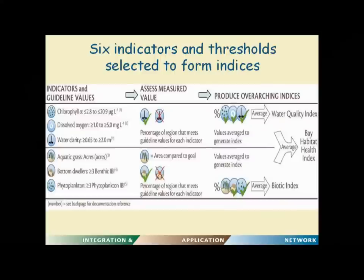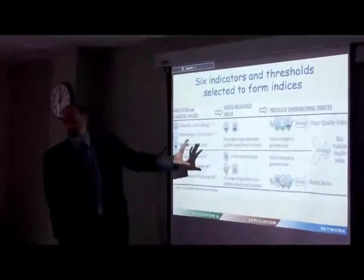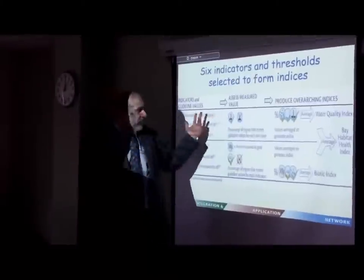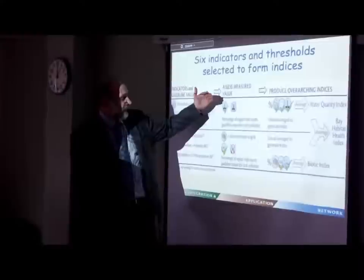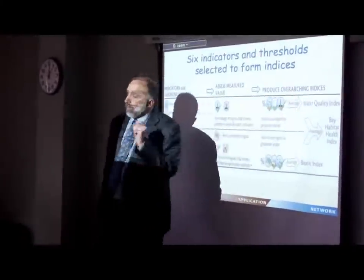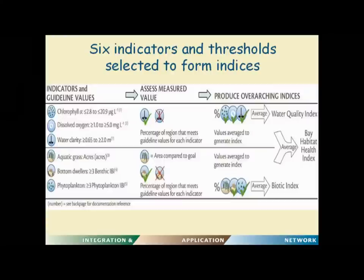The idea I want to present today involves the Bay Health Index developed as part of the EcoCheck, NOAA, and University of Maryland Center for Environmental Science partnership. We take three indicators of water quality — chlorophyll A, dissolved oxygen, and water clarity — establish thresholds for those three, plus three biotic indicators: aquatic grasses, bottom dwellers (the benthic index of biotic integrity), and the phytoplankton index of biotic integrity. We combine these six indicators using those thresholds to create a water quality index and a biotic index, which together form the Bay Health Index.